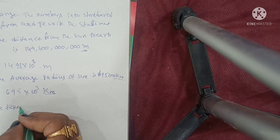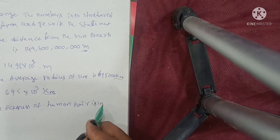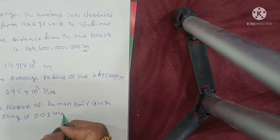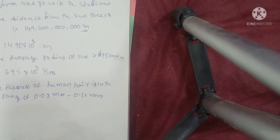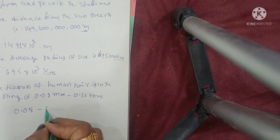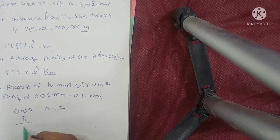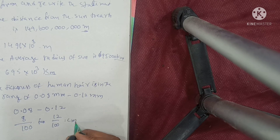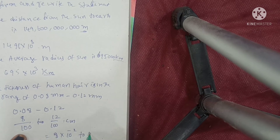The thickness of human hair is in the range of 0.08 millimeters to 0.012 millimeters. Solution: 0.08 is 8 by 100, and 0.012 is 12 by 100. So how to write: 8 into 10 to the power of minus 2, and 12 into 10 to the power of minus 2 centimeters. Simple.